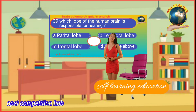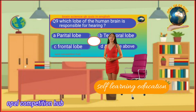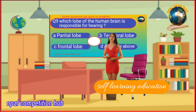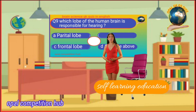Question number 9: Which lobe of the human brain is responsible for hearing? Option A: Parietal lobe. Option B: Temporal lobe. Option C: Frontal lobe. Option D: All of the above. Your time starts now. Your answer will be Option B: Temporal lobe.